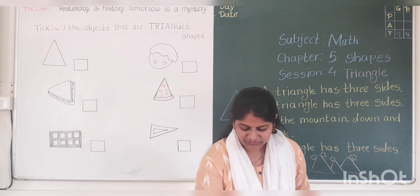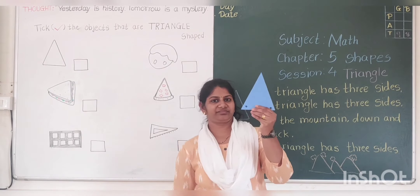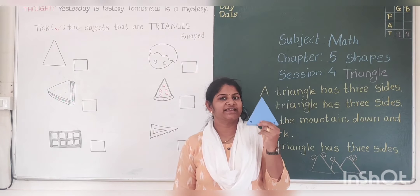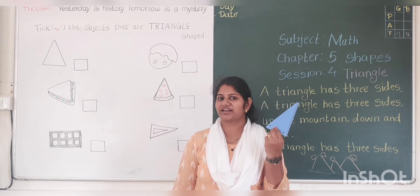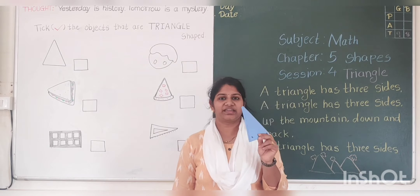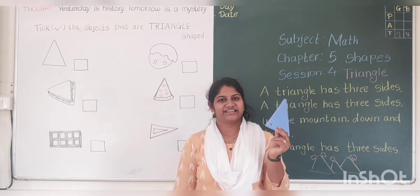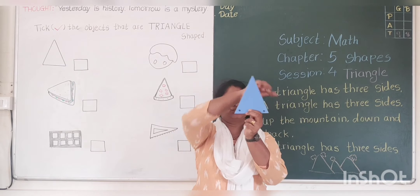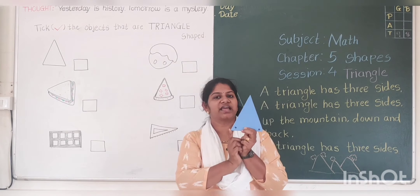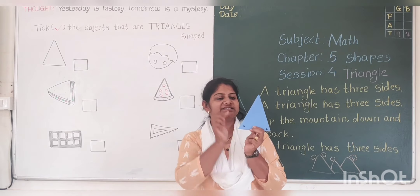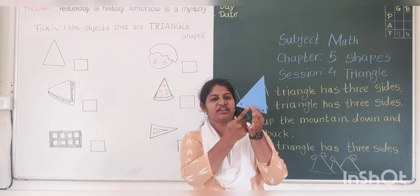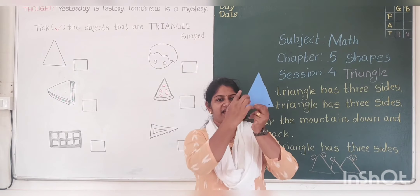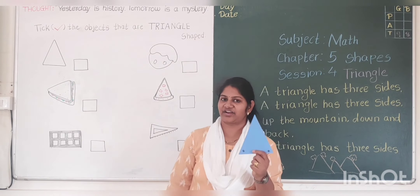Now I am going to show you triangle shape. This is a triangle shape. And which color is this? This is blue color. I have taught you in your EVS subject. 1, 2, 3. 3 corners. 1, 2, 3. 3 corners and 3 sides. This is a triangle.